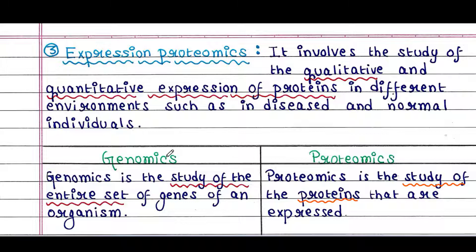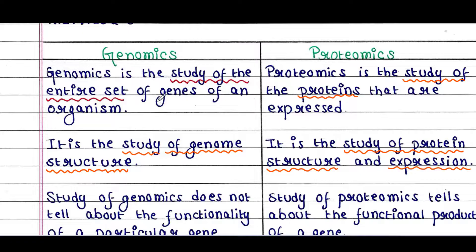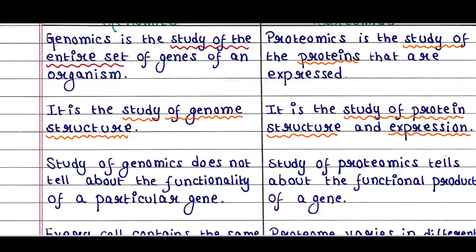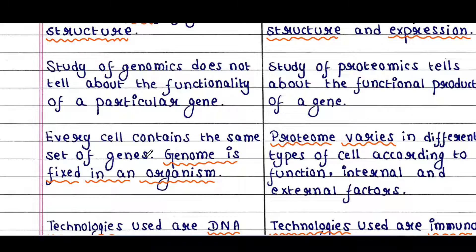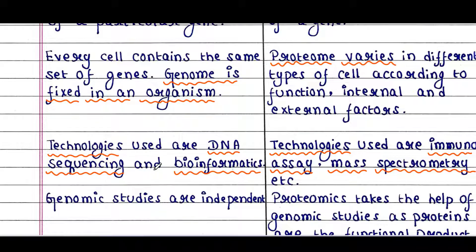Genomics is the study of the entire set of genes of an organism, while proteomics is the study of the proteins that are expressed. Genomics studies genome structure; proteomics studies protein structure and expression. Study of genomics does not tell about the functionality of a particular gene, whereas proteomics tells about the functional products of a gene. Every cell contains the same set of genes — genome is fixed in an organism — whereas proteome varies in different types of cells according to function and internal and external factors. Technologies used in genomics are DNA sequencing and bioinformatics; in proteomics, technologies used are immunoassay, mass spectrometry, etc.